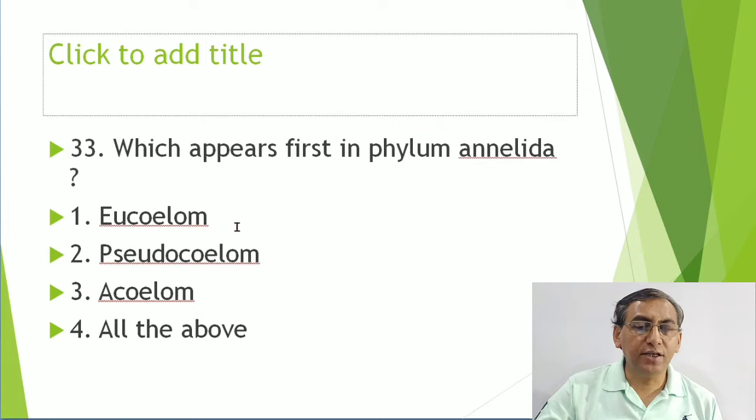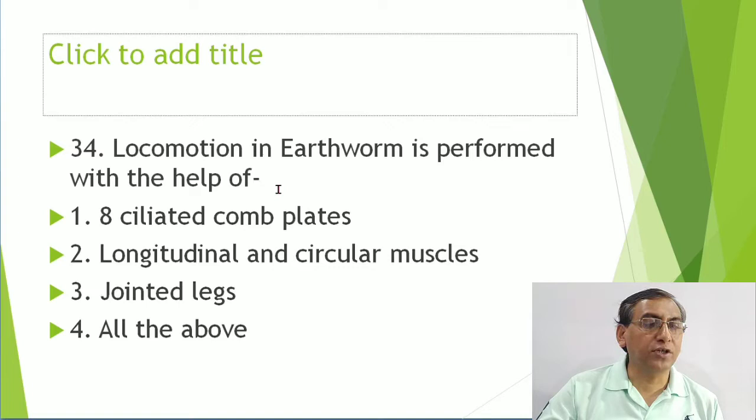Which feature appears first in phylum Annelida? Platyhelminthes is acoelomate, Aschelminthes is pseudocoelomate, and Annelida has the eucoelomate condition. So the true coelom first appears in Annelida.